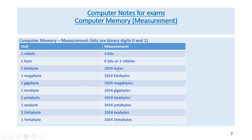One kilobyte is 1024 bytes; one megabyte is 1024 kilobytes; one gigabyte is 1024 megabytes; one terabyte is 1024 gigabytes; one petabyte is 1024 terabytes; one exabyte is 1024 petabytes; one zettabyte is 1024 exabytes; one yottabyte is 1024 zettabytes.